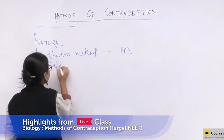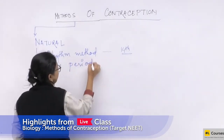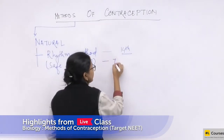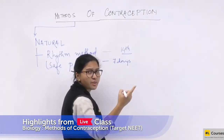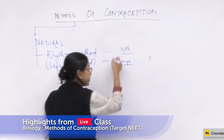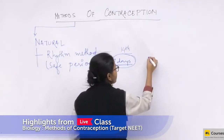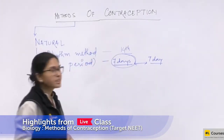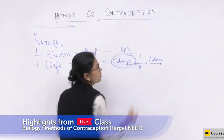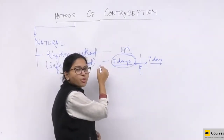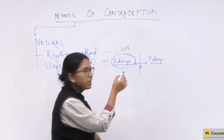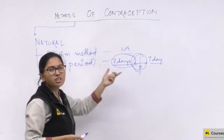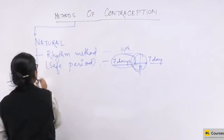Another name for this method is the 'safe period.' The couple will have intercourse during the seven days just after the menstrual cycle and seven days prior to the menstrual cycle. In between, intercourse is avoided because day 14 is the ovulation day. Since it is based on the natural rhythm of the female, this comes under natural methods of contraception.